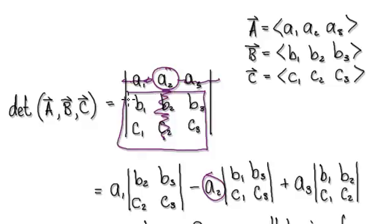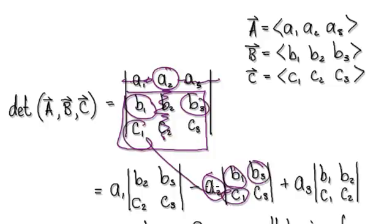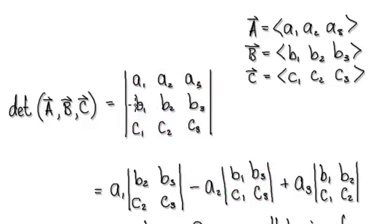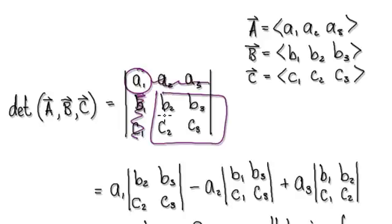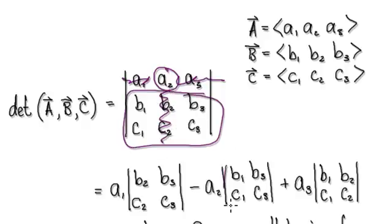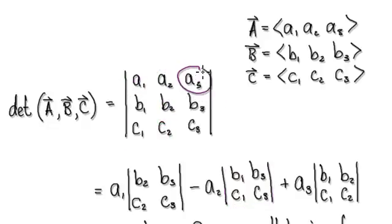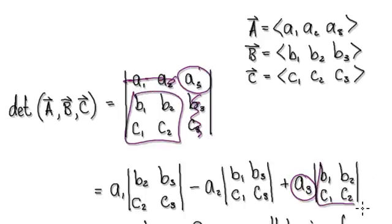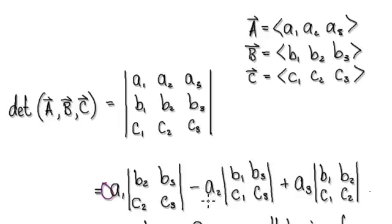Now look at the remaining sub-matrix for the second element. Let's start again clearly: the first element — discard everything straight across and everything straight down — gives you this sub-determinant. The second element — discard straight across and straight down — gives you these four entries. The third element — discard straight down and straight across — gives you this sub-determinant.